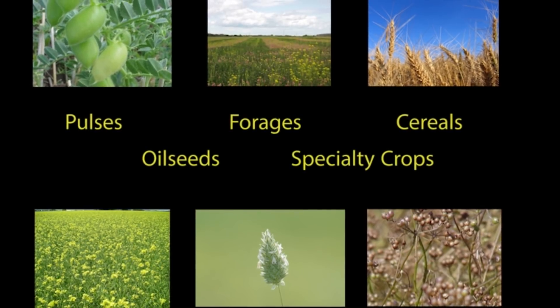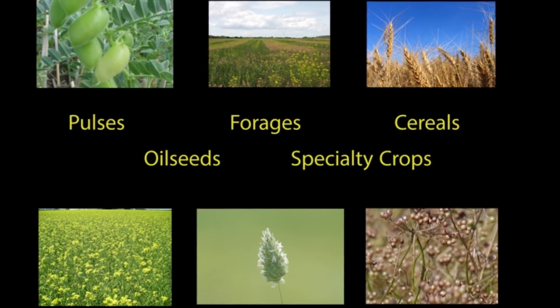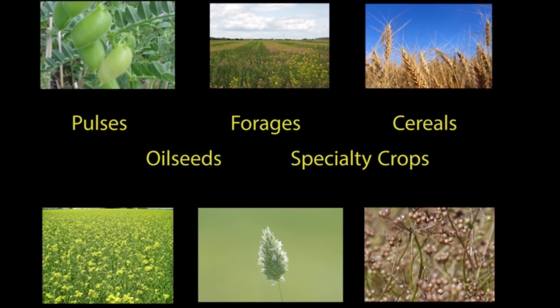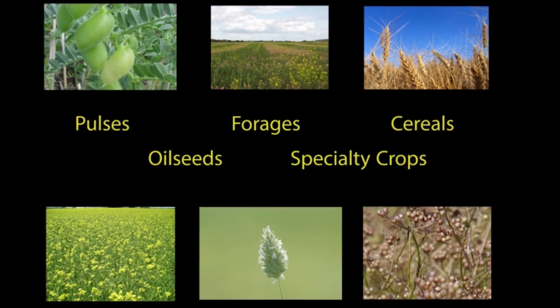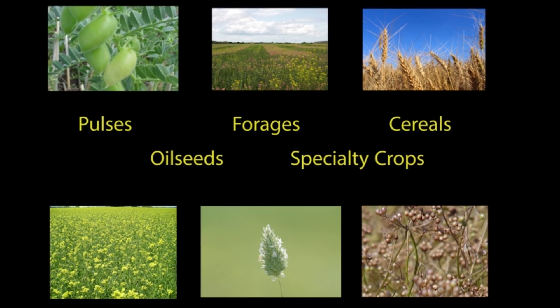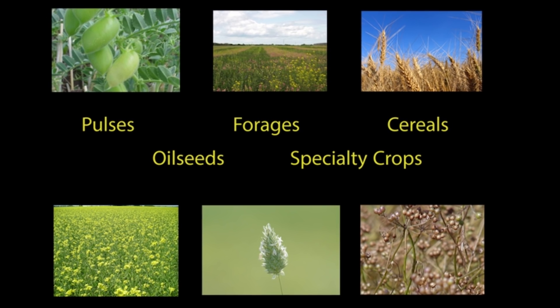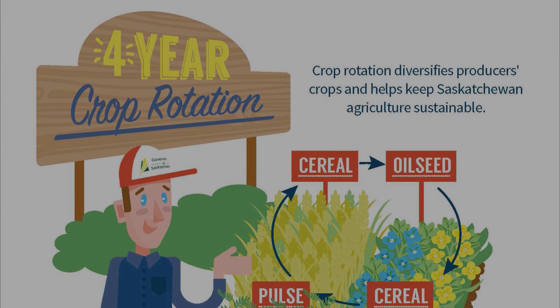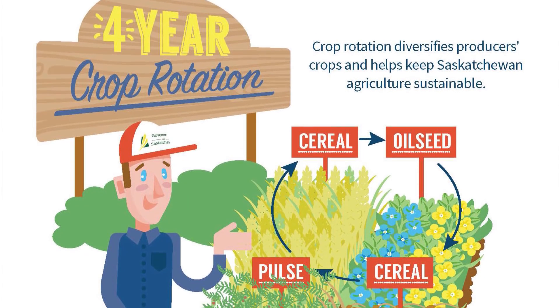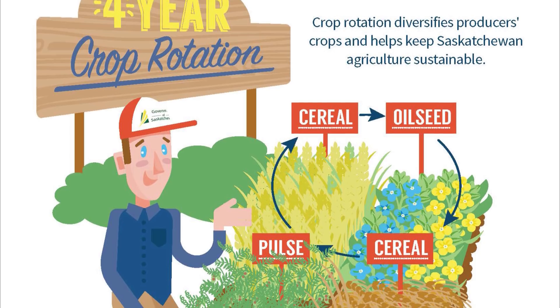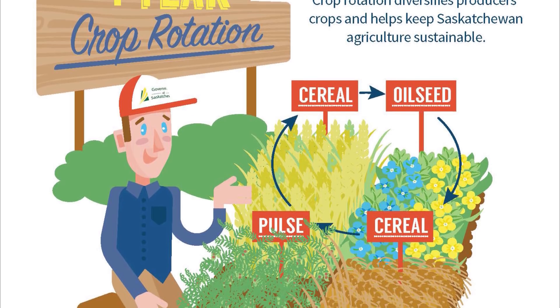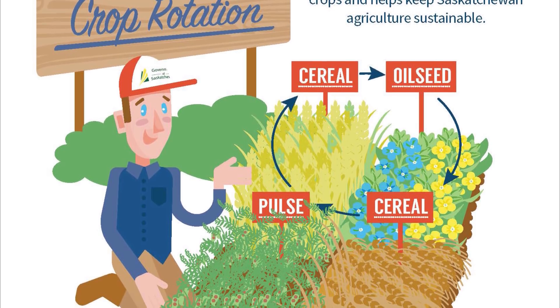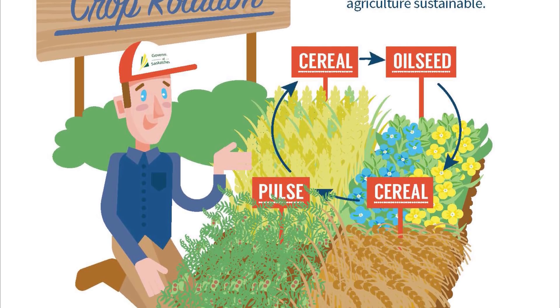There are more than 40 different crops that are grown and marketed in Saskatchewan. This allows for diverse crop rotation, ensuring long-term sustainability. A good example of a four-year rotation is oilseed, cereal, pulse, cereal.